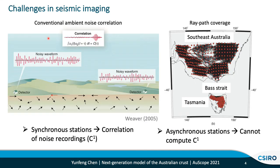Ambient noise correlation is a widely applied technique to study crustal structures. This is a famous figure from 2005. Here, there are two stations recording noisy waveforms. If we cross-correlate these noisy waveforms, we can recover the empirical Green's functions propagating between the two stations. The underlying assumption of this method is that the two stations need to be deployed at the same time — in other words, they need to simultaneously record these noisy waveforms.